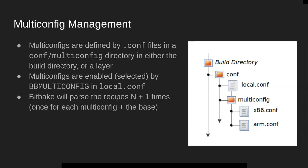You enable or select multi-config by adding them to the BB_MULTI_CONFIG variable in local.conf. When you enable a given set of multi-configs, BitBake will go through and parse all of your recipes n+1 times. So if you have two multi-configs enabled, BitBake is going to parse all the recipes three times — once for each multi-config, plus one additional time for what I call the base or default configuration, which is local.conf with no multi-config active.